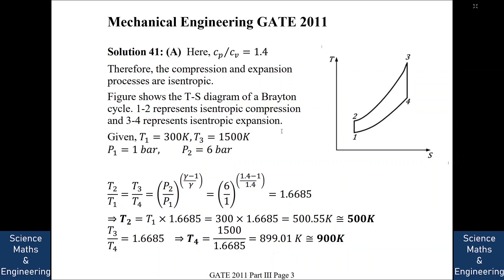We know T1, T3, P1, and P2. Using the formula T2/T1 = T3/T4 = (P2/P1)^((γ−1)/γ), we get (6/1)^((1.4−1)/1.4) = 1.6685. So T2 = T1 × 1.6685 ≈ 500 Kelvin. And T4 = T3/1.6685 = 1500/1.6685 ≈ 899 Kelvin, approximately 900 Kelvin. So the answer is 500 Kelvin and 900 Kelvin.